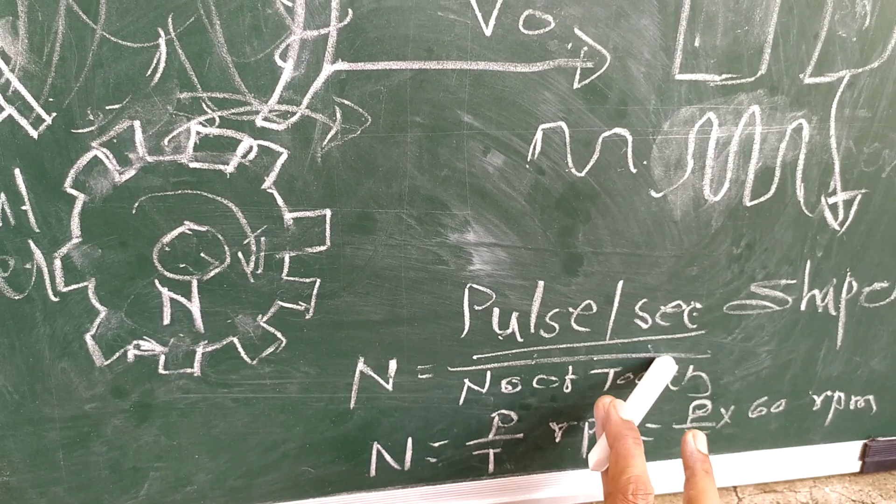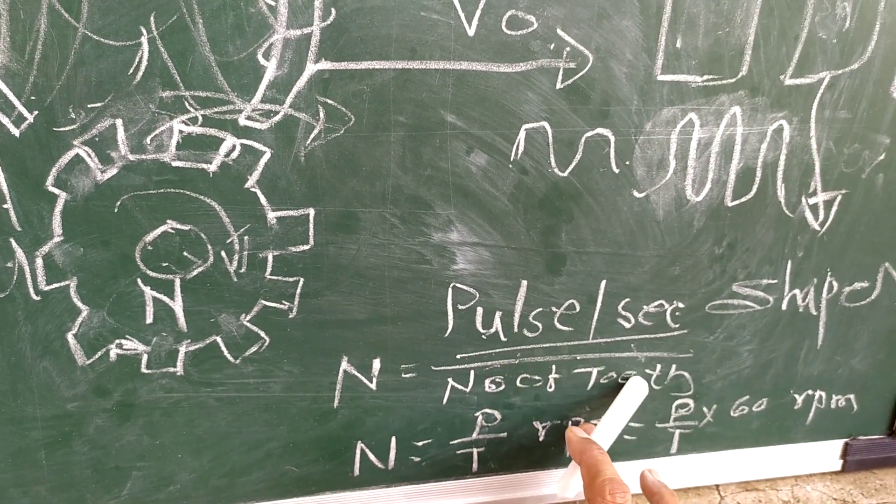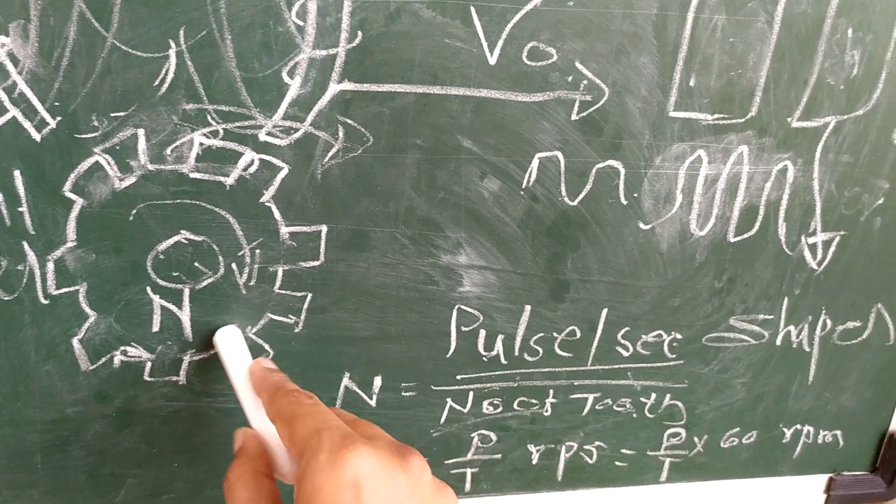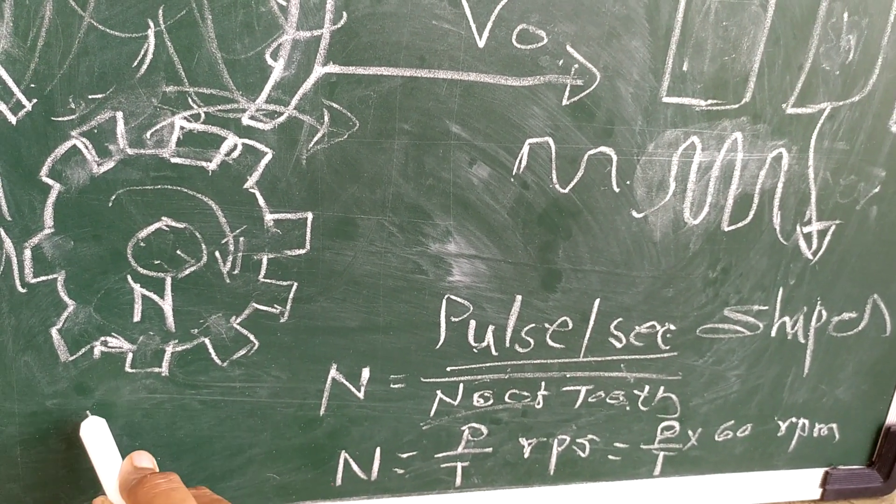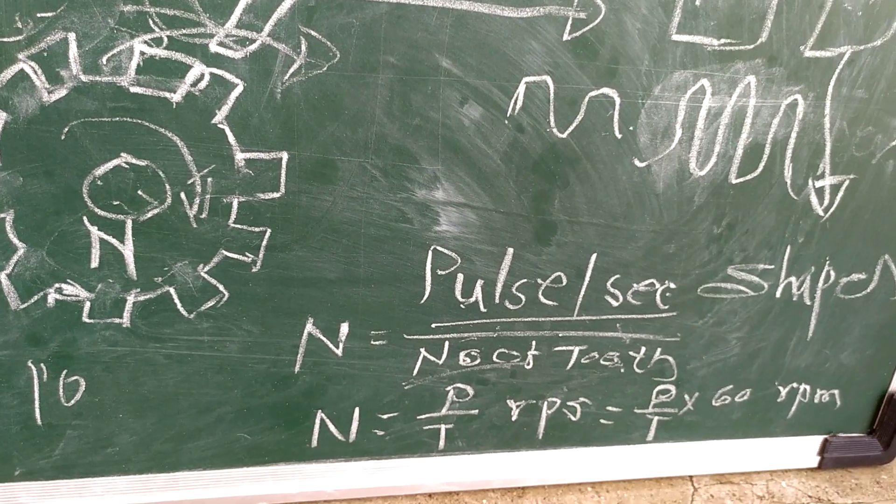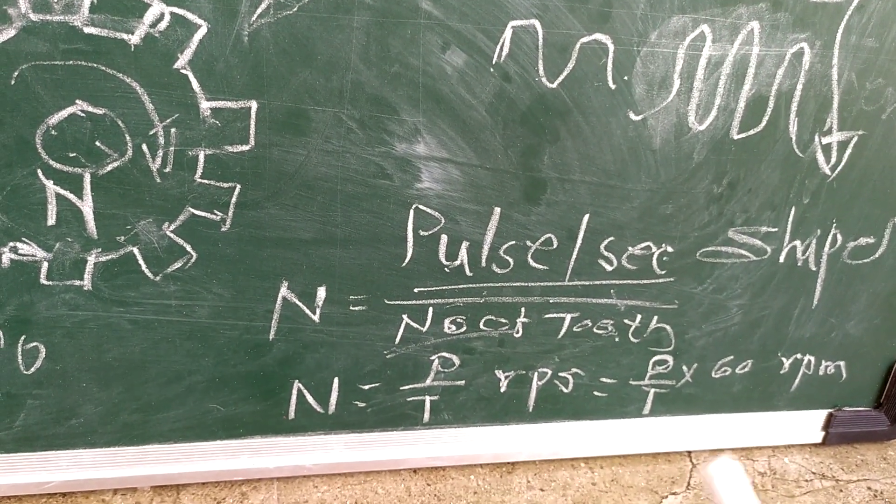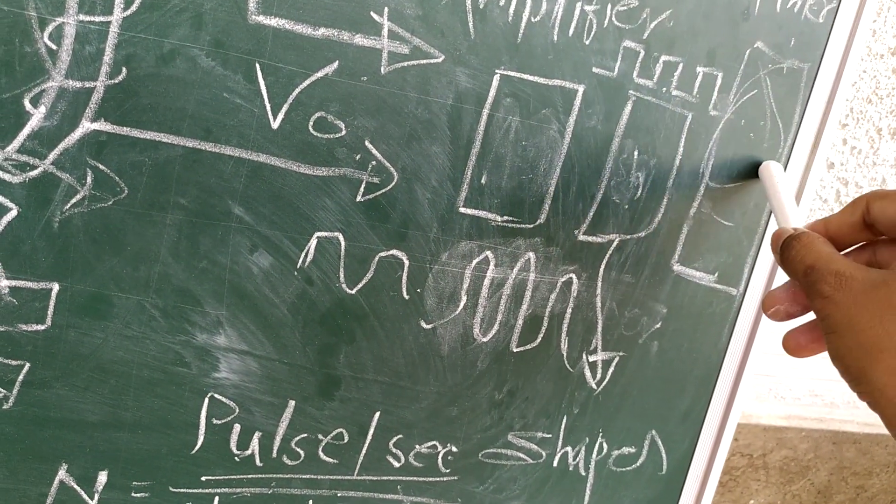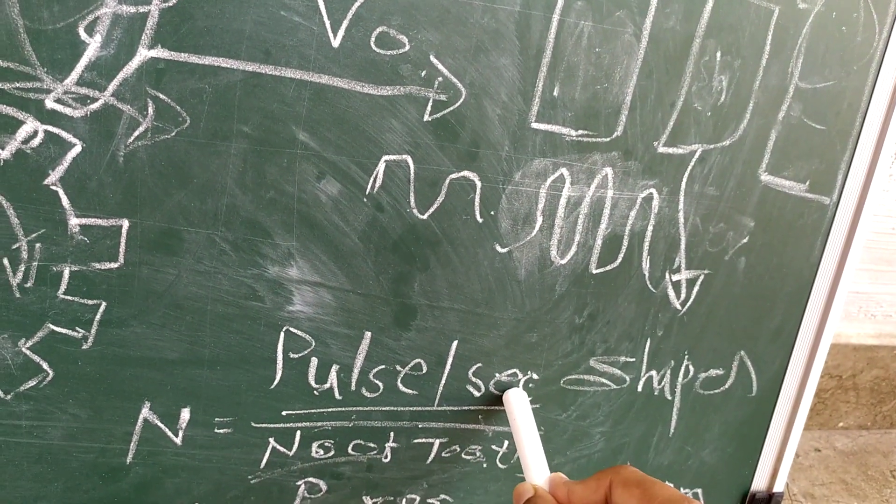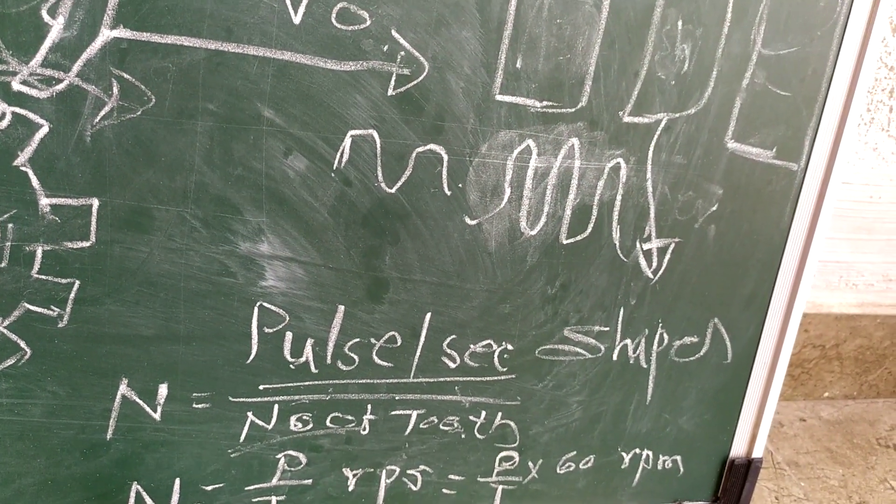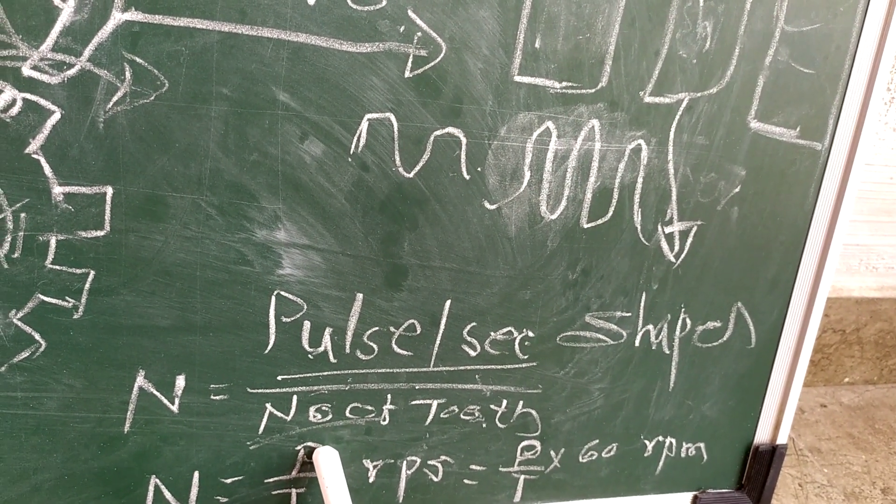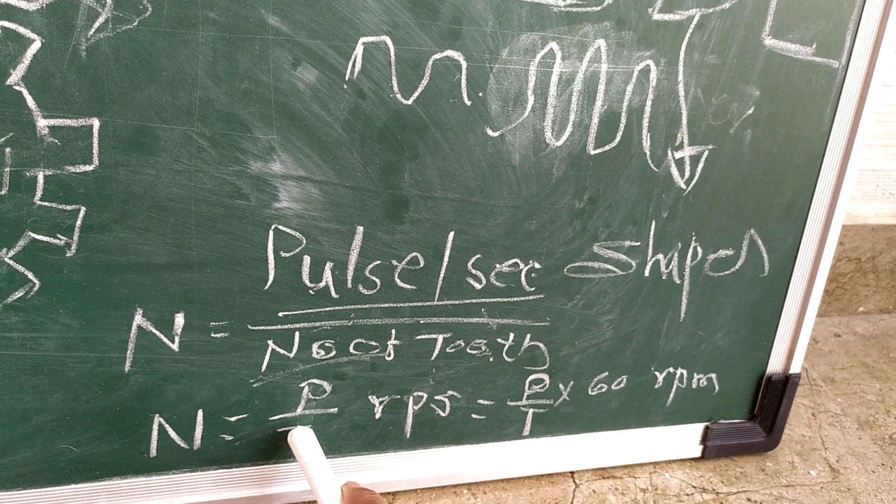The number of teeth we know - if it is given some value like 10 or 12, whatever value is provided. We can take the pulses from this frequency timer. Pulses per second divided by number of teeth will give the value - pulses per second is denoted by P, and number of teeth by T. This gives N, which is RPS (revolutions per second).